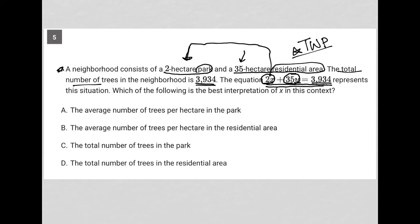Choice A, the average number of trees per hectare in a park. Like that a lot. Choice B, the average number of trees per hectare in the residential area. Definitely not. That's the y. The total number of trees in a park. Total number of trees in a park. No, because why would you multiply it by 2? The total number of trees in a residential area. This has nothing to do with residential area. So choice A is the best answer here.